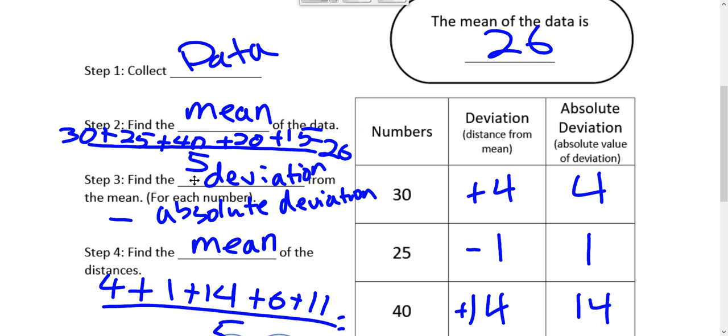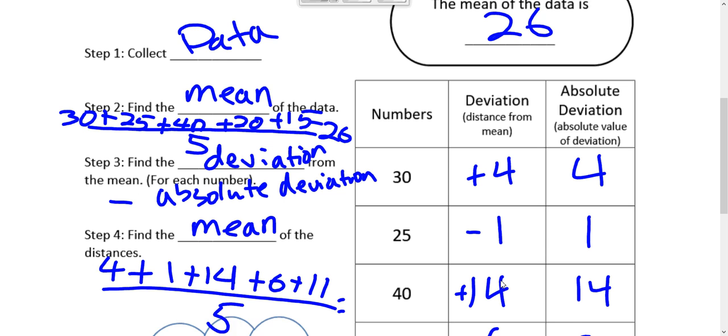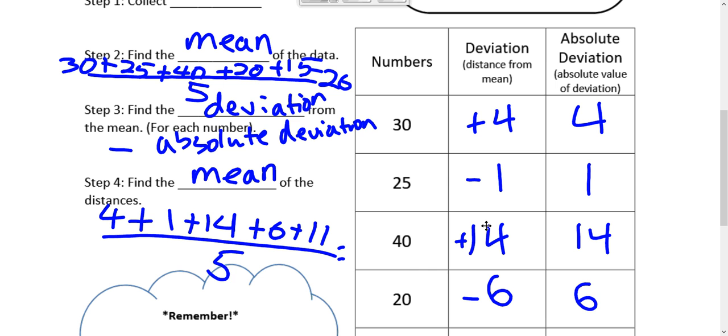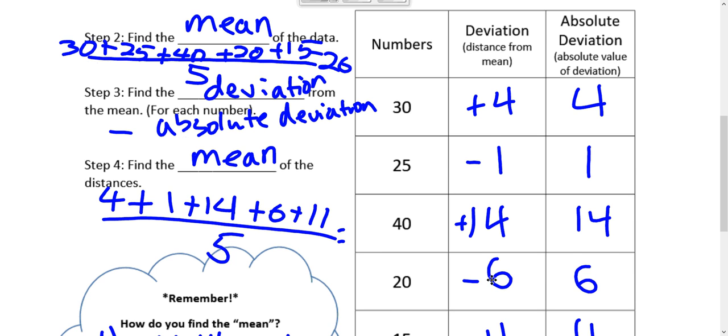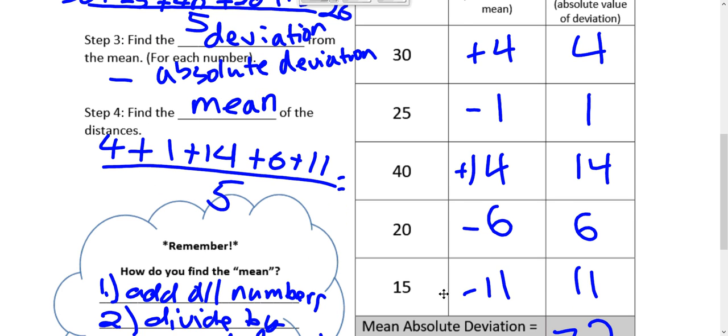And then we're going to find the deviation of the distance away from the mean. And since 30 is 4 above 26, we put plus 4. 25 is 1 less than 26, so we put minus 1. And then, and so on. We have 14 away, we have 6 away, 11 away.